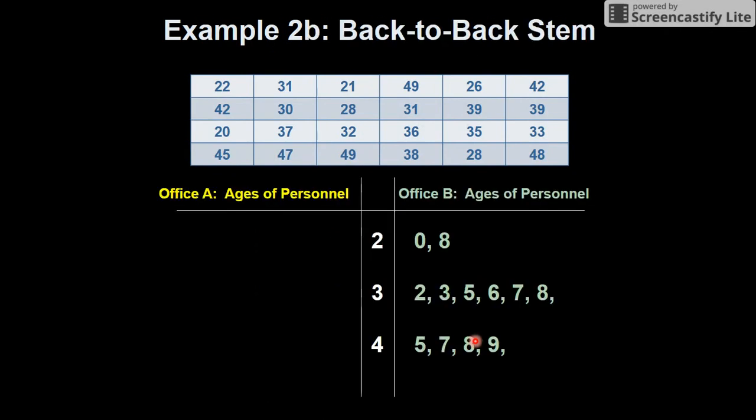And then a back to back. Office B, they've got a 20 and a 28, a 32, a 33. And then this one, they've got a 28, a 26, a 22, a 21, a 39, a 39, a 31, a 31, and a 0. But all in numerical order.